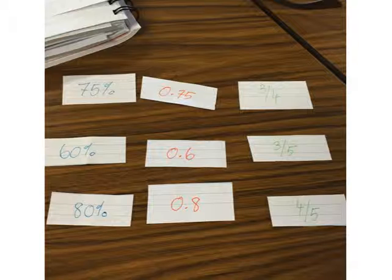So eventually we would find them where there is 75%, 0.75, which is equivalent to 3 quarters.